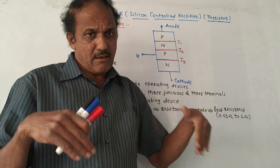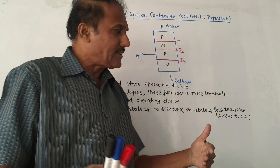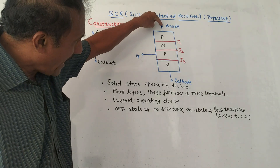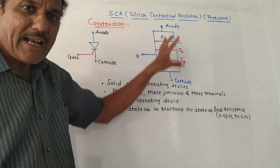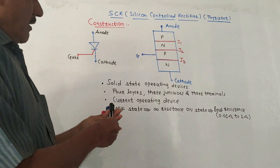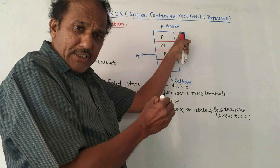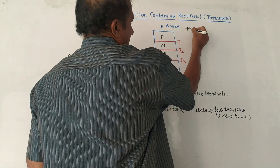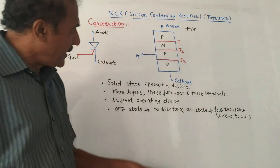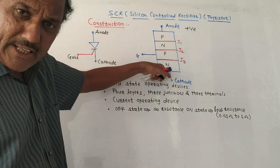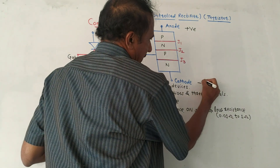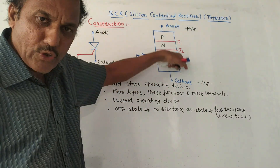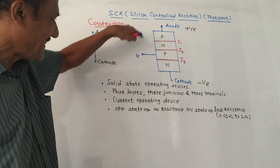This device is basically a current control device. By applying current at the gate terminal, the current flowing from anode to cathode can be controlled. The current entering from the anode terminal is treated as positive current, whereas the current leaving from the cathode is treated as negative current, and it is controlled using the gate terminal.